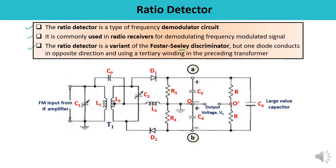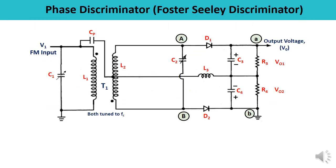This is the block diagram of the ratio detector circuit. You can observe that there is a very slight variation from the Foster-Seeley discriminator. Recall the block diagram drawn for the phase discriminator or Foster-Seeley discriminator — observe the direction of the diodes, how they are connected, and where the output is being taken. If you recall that diagram, you will be able to understand the ratio detector.